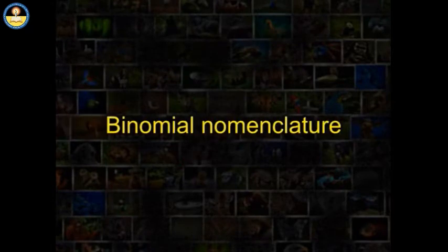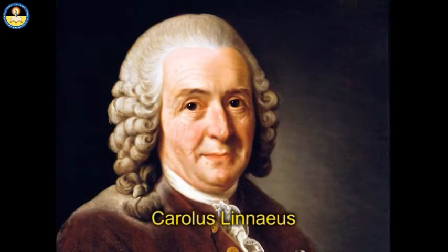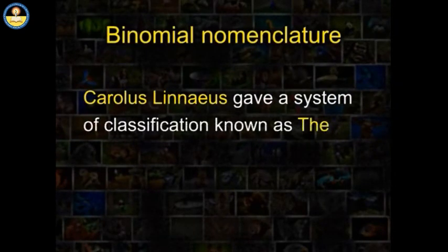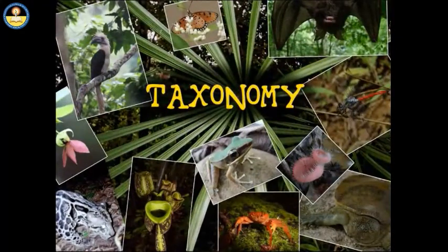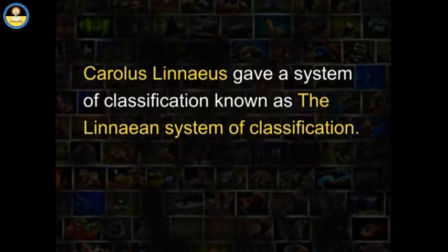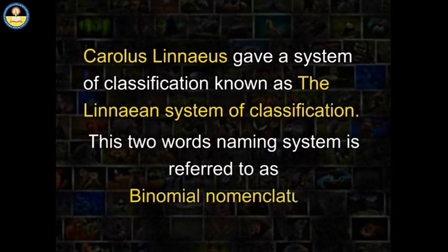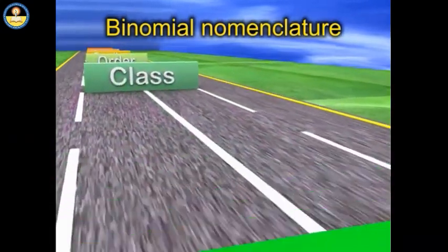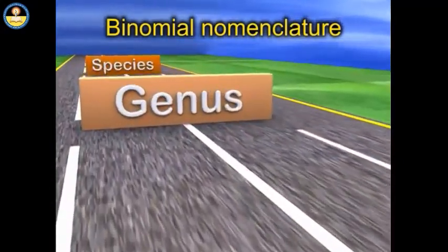The system of naming was also given by Carolus Linnaeus. This Linnaean system of classification has been widely accepted by all and, till date, it provides the basic framework for all activities related to taxonomy. Such a two-word naming system is referred to as binomial nomenclature, also known as the binomial system of classification.